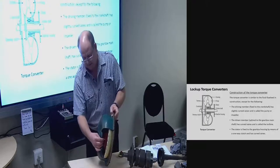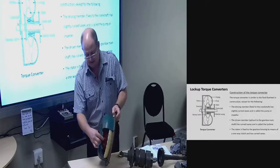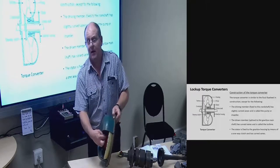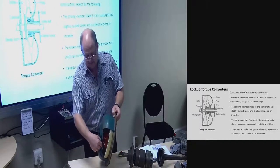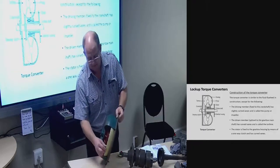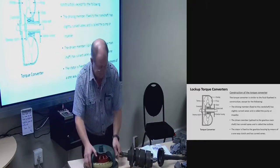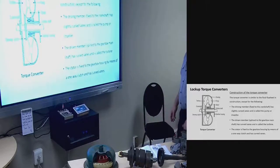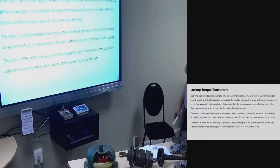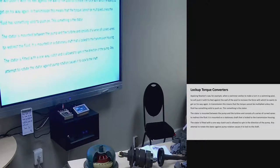Here is the actual torque converter example. On this side — attached to the shaft — is the flex plate with the ring gear. The blue section is the impeller. The yellow section, which is attached to the shaft going through the hole into the gearbox, is the turbine — my driven member. The red section in the middle is the stator.